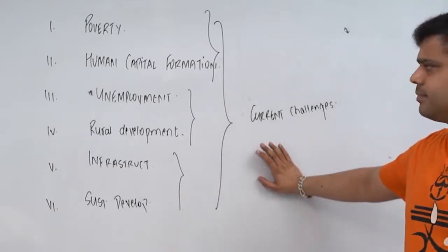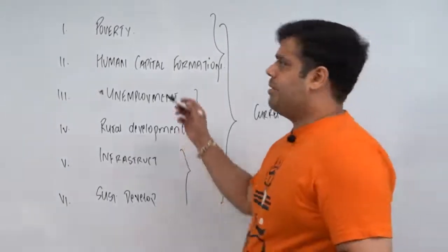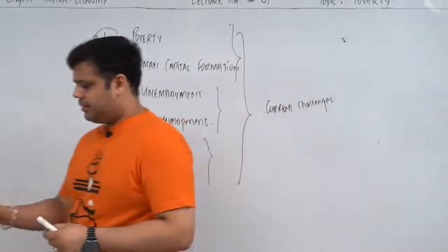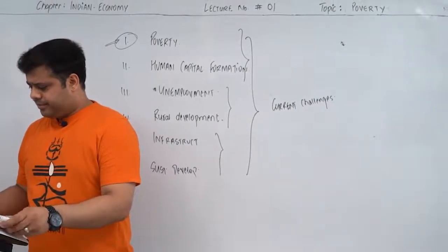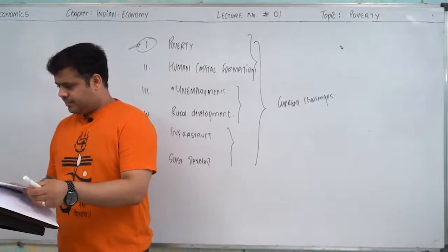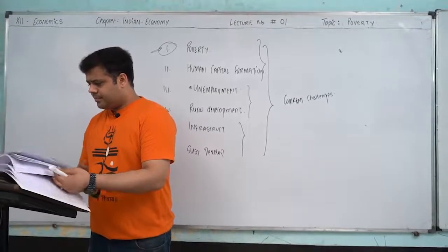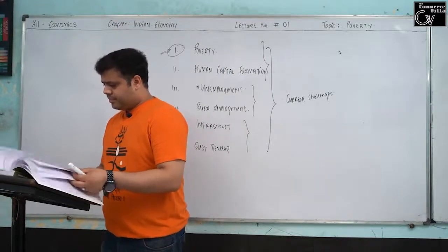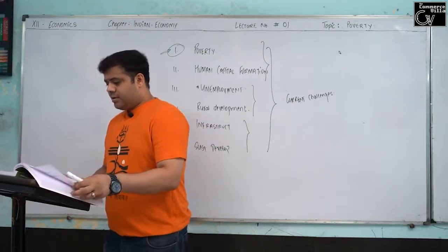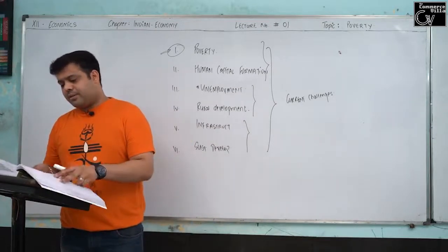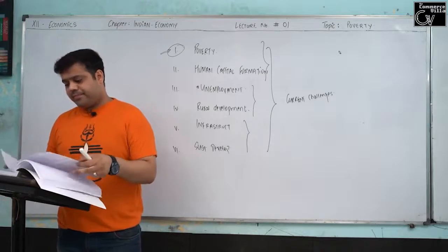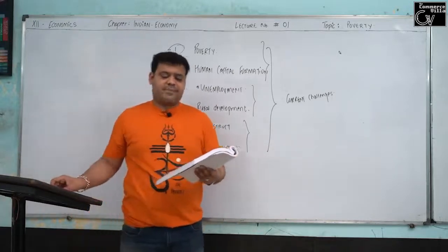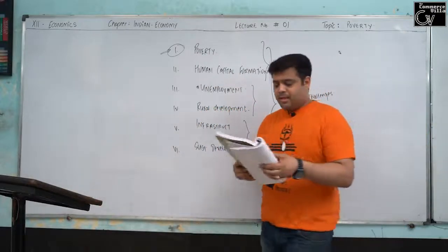Clear everyone? Let's start with the chapter on poverty — 'garibi'. Please open page number 54 and 55. Chapter 4 is on poverty.